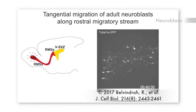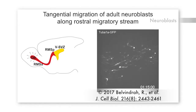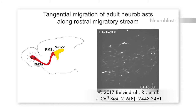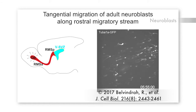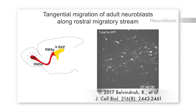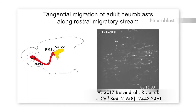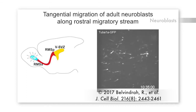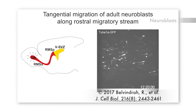Most neuronal migration occurs during embryogenesis, but in the adult brain, interneuron precursors or neuroblasts arise in the ventricular subventricular zone and then migrate tangentially along a defined path called the rostral migratory stream towards the olfactory bulb, where they differentiate and integrate into local olfactory circuits.